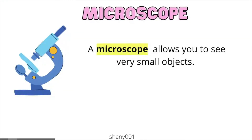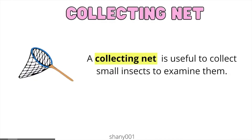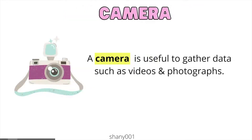Microscope. A microscope allows you to see very small objects. Collecting net. A collecting net is useful to collect small insects to examine them. Camera. A camera is useful to gather data, such as videos and photographs.